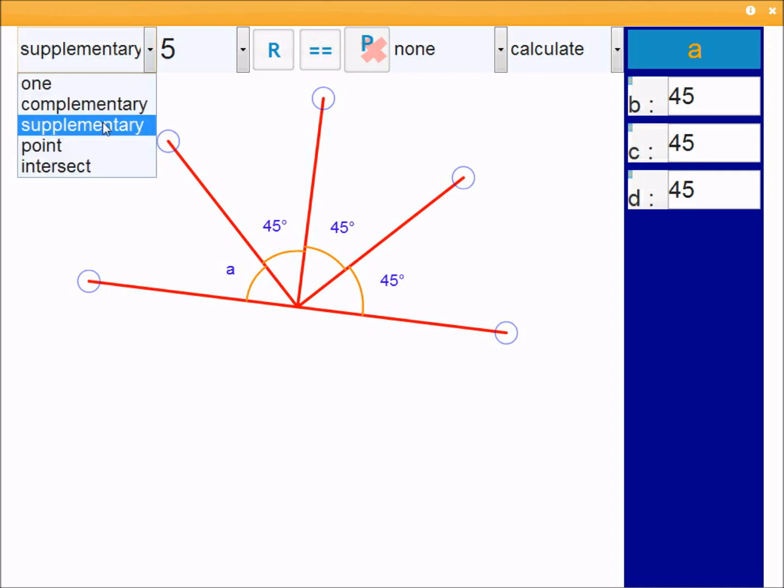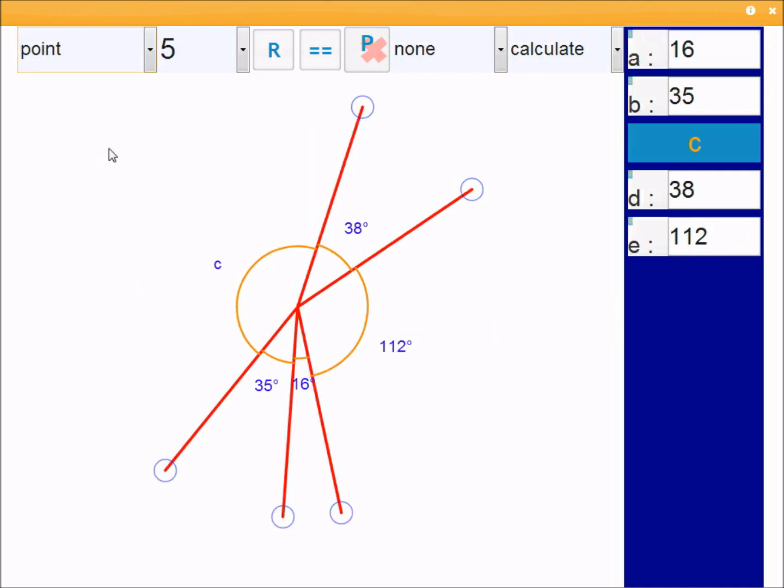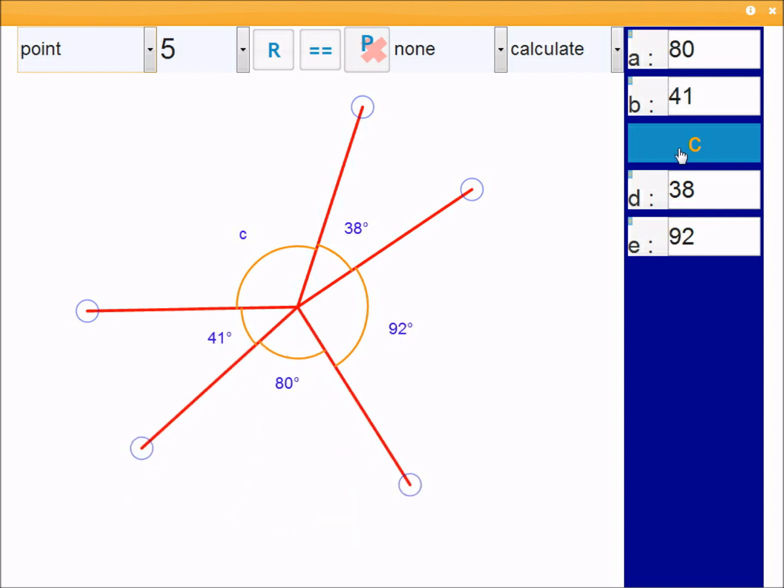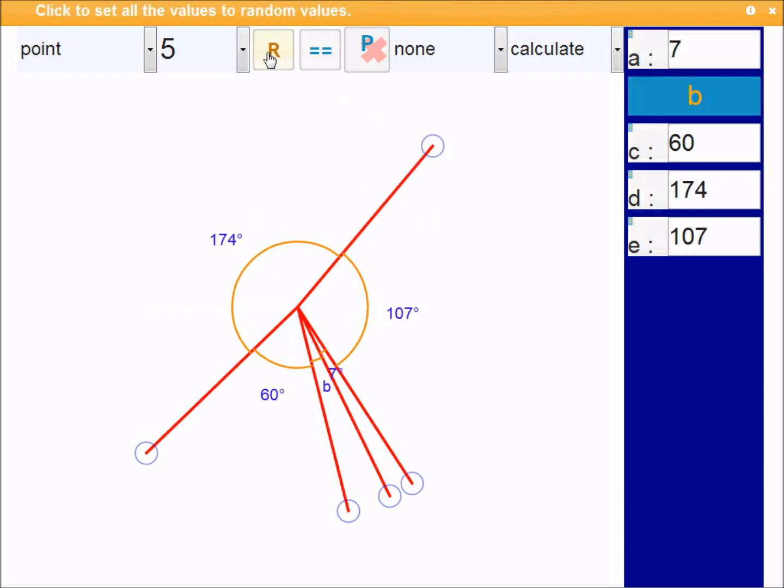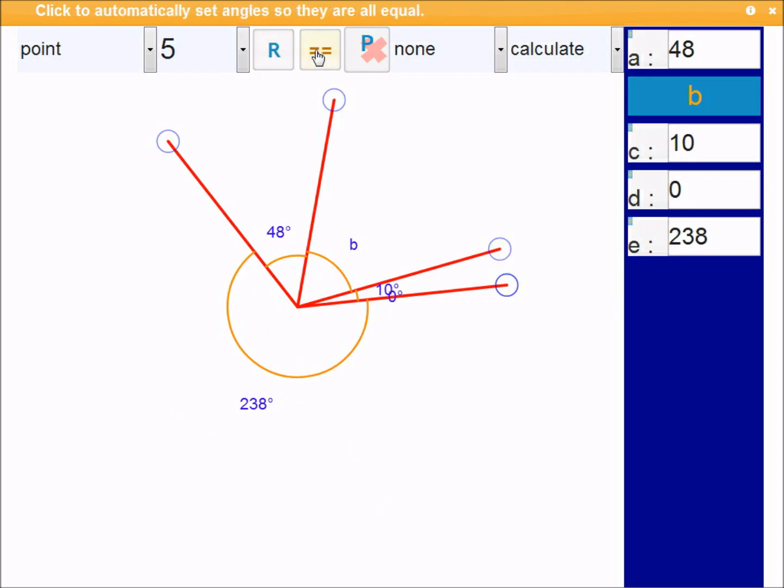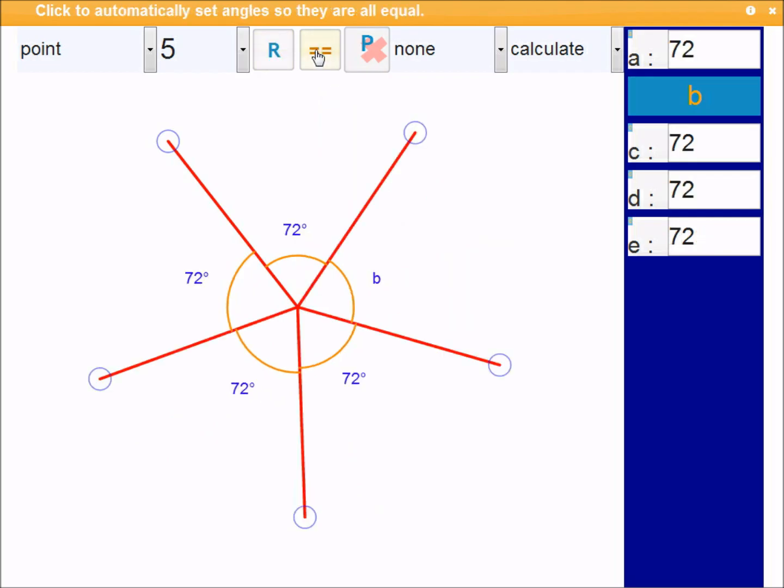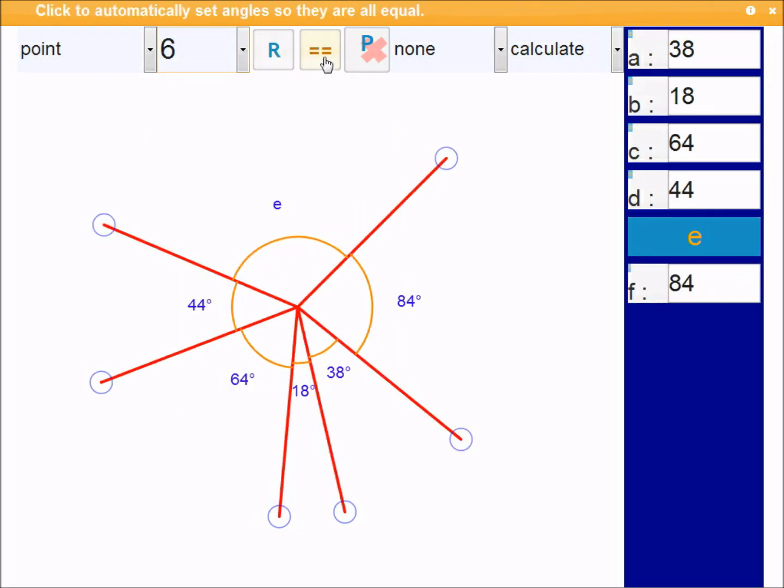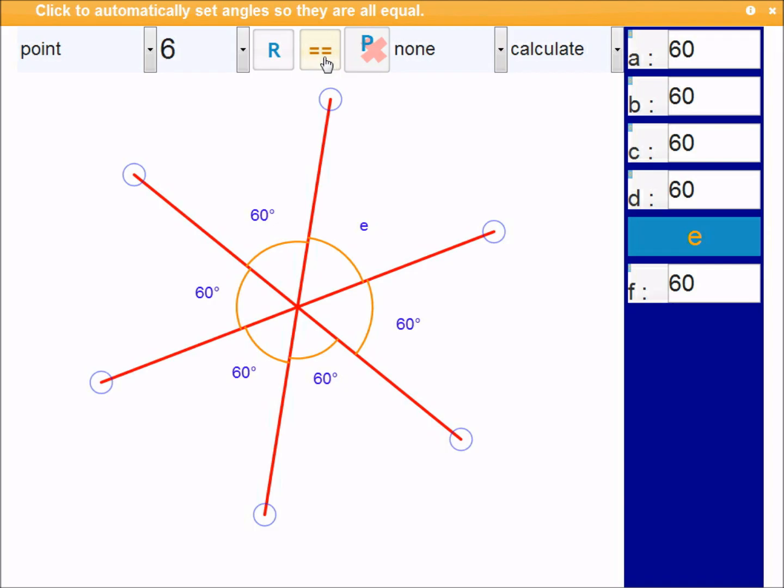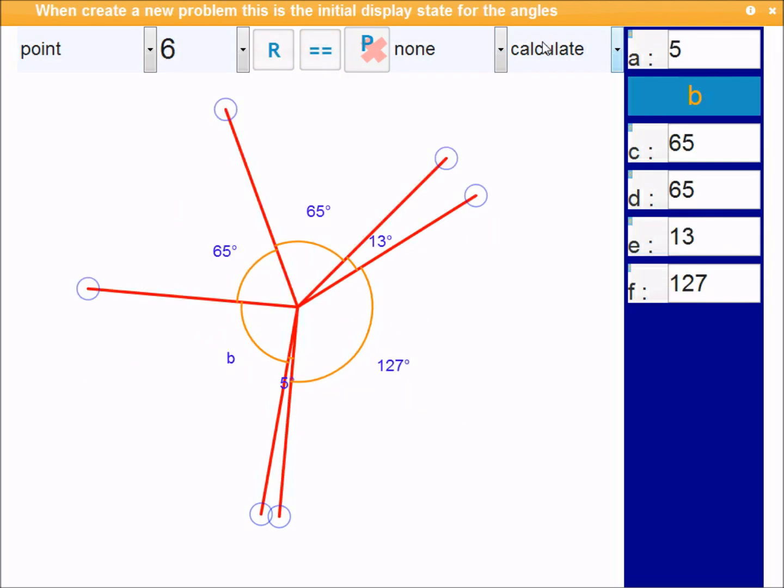So moving on quickly to point. This is angles at point. The angles at point add up to 360 degrees. You could check that by revealing this, and have the class use the calculators to add up, or create a random problem, and see if the same thing happens. Again, we can use equal button. When there's 5, 360 divided by 5 is 72. What's it with 6? 60 degrees each. Okay, so that's angles at point. Random problems, very similar to the last two modes.